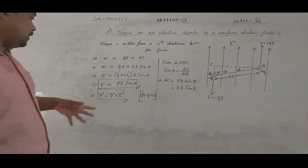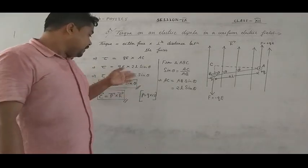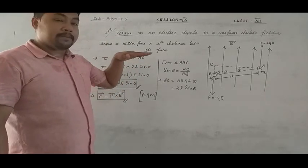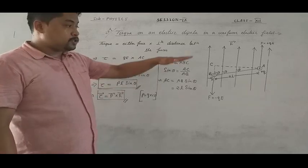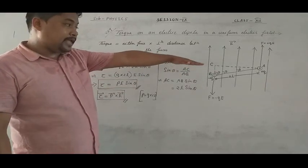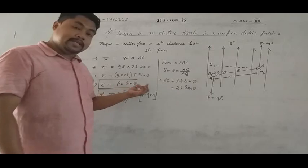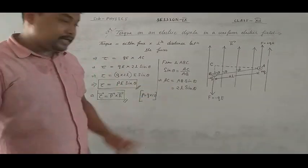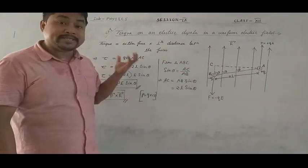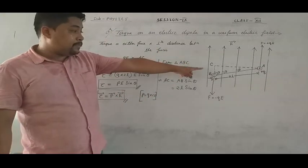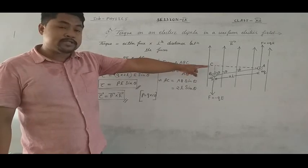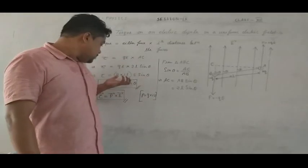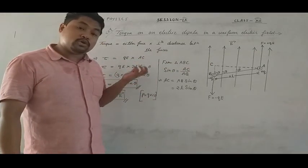Now the conditions are: Condition 1 — if theta equals 90 degrees, that is the dipole is placed perpendicular to the electric field, then sin 90 degrees equals 1, and therefore torque equals PE, which is the maximum torque. The torque on the dipole is maximum when theta equals 90 degrees.